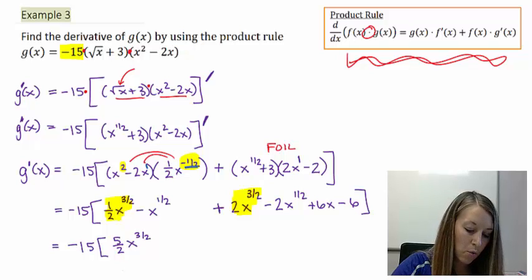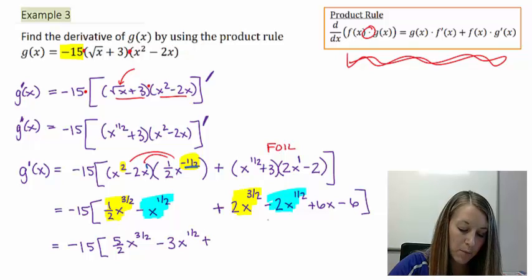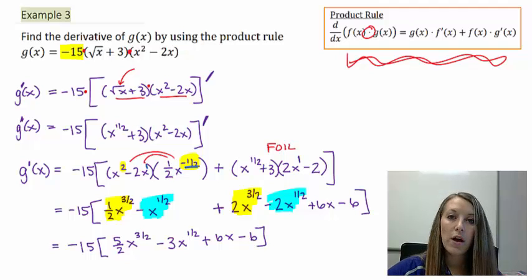Now my one-half, negative 1x to the one-half minus 2x to the one-half gives me negative 3x to the one-half. And then copying down the rest of it, 6x minus 6. So I've simplified the inside of my brackets.